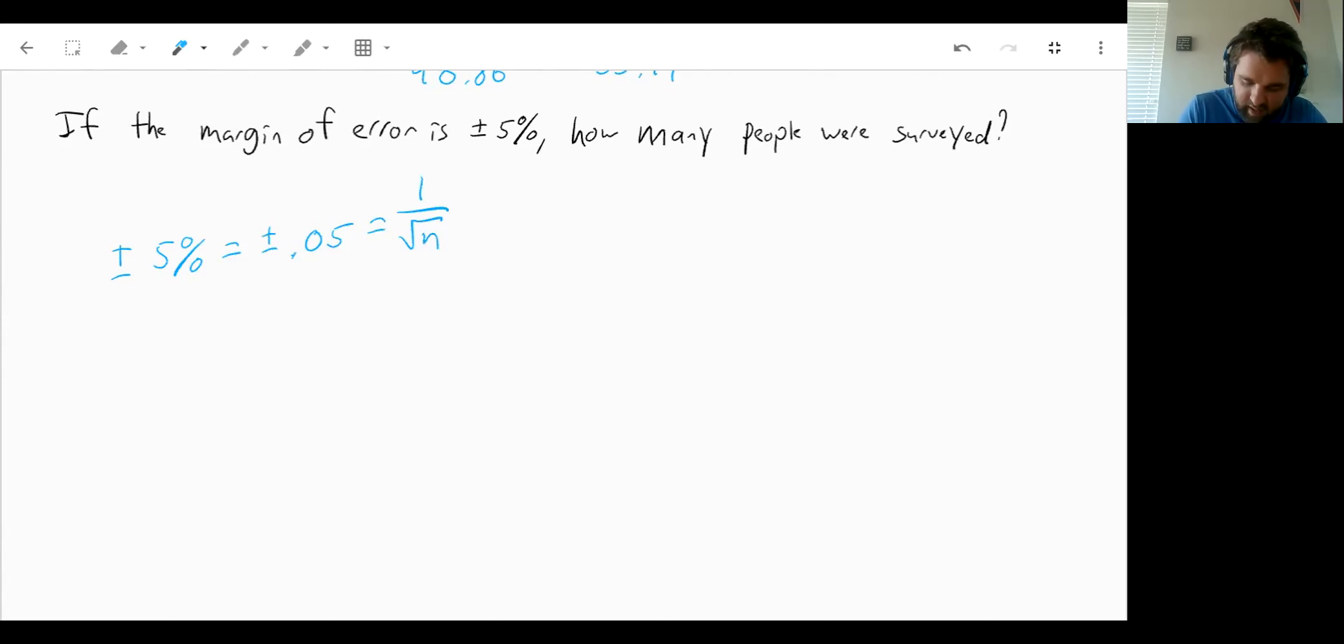Or in other words, we can cross multiply here which would give us 0.05 square root of n equals 1. Now we can divide by 0.05 on both sides and we'll get the square root of n equals 1 divided by 0.05. That will give us an answer of 20. So then when we square both sides, we will come out with an answer of n has to equal 400. So if you have a 5% margin of error, you surveyed about 400 people. So that's all I've got for you. Good luck and let me know if you've got any questions on this section.